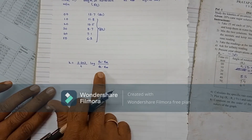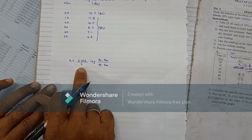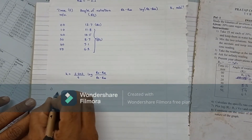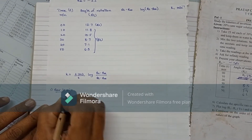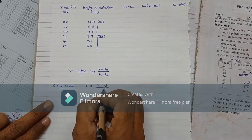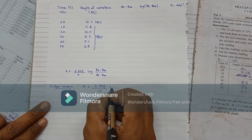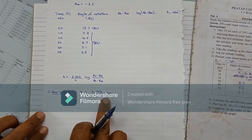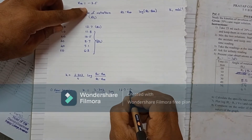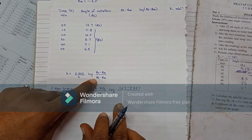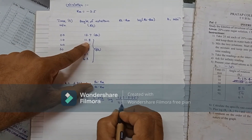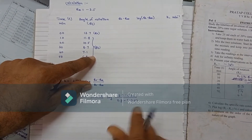Then we have to calculate the rate constant K. This is the formula for K: K = 2.303 / T × log((R₀ − R∞) / (Rₜ − R∞)). Calculation for 10 minutes: K = 2.303 / 10, where 10 is the value for time T. Then log of R₀ — R₀ is 13.7 — minus R∞, which is −3.5. Then Rₜ for 10 minutes is 11.8, minus R∞ again, which is −3.5.